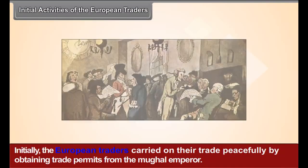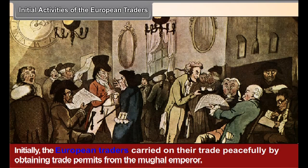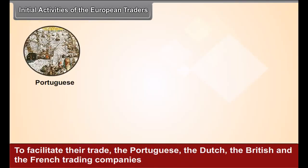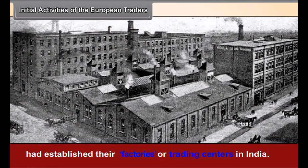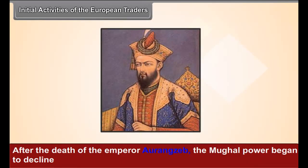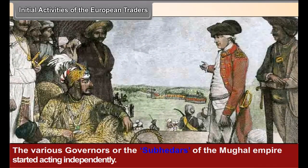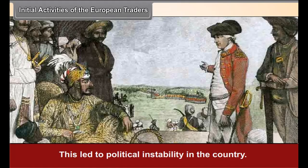Initial Activities of the European Traders. Initially, the European traders carried on their trade peacefully by obtaining trade permits from the Mughal Emperor. To facilitate their trade, the Portuguese, the Dutch, the British and the French trading companies had established their factories or trading centers in India. After the death of Emperor Aurangzeb, the Mughal power began to decline. The various governors or Subedars of the Mughal Empire started acting independently, which led to political instability in the country.